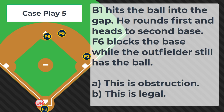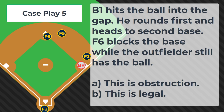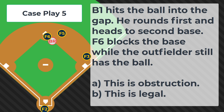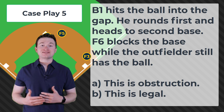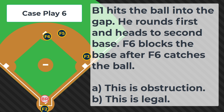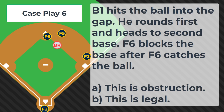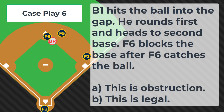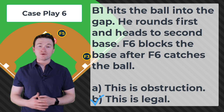Case play number five: B1 hits the ball into the gap. He rounds first and heads to second base. F6 blocks the base while the outfielder still has the ball. Is this obstruction or is this legal? The correct answer is this is obstruction, because the fielder does not have the ball and cannot block the runner's access to the base. Case play number six: B1 hits the ball into the gap. He rounds first and heads to second base. F6 blocks the base after F6 catches the ball. Is this obstruction or legal? The correct answer is this is legal — once the fielder has the ball, they are able to block the base.